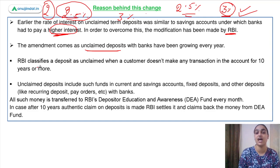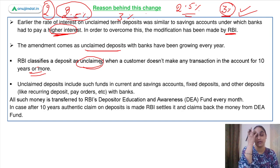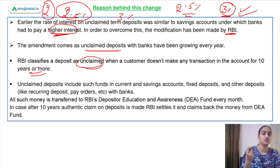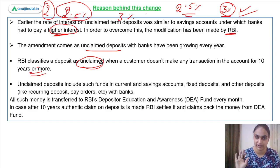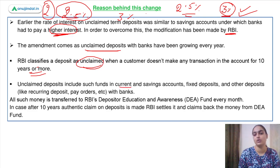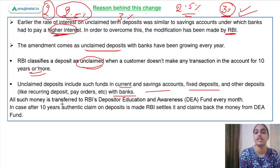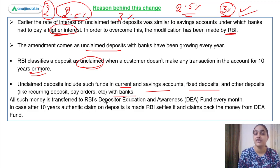RBI classifies a deposit as unclaimed when a customer doesn't make a transaction in an account for 10 or more years. Unclaimed deposits include funds in your current account, savings account, fixed deposits, and other deposits with banks — all such money where you have not been operating the account or your deposit for a period of 10 years or more. That money will be transferred to RBI's Depositor Education and Awareness Fund every month.